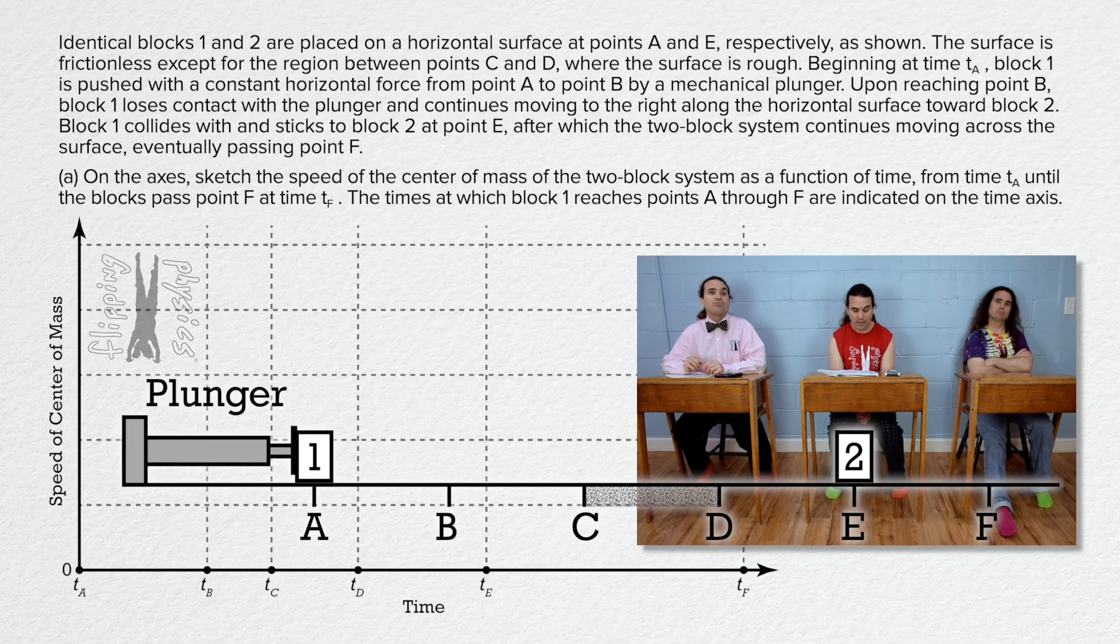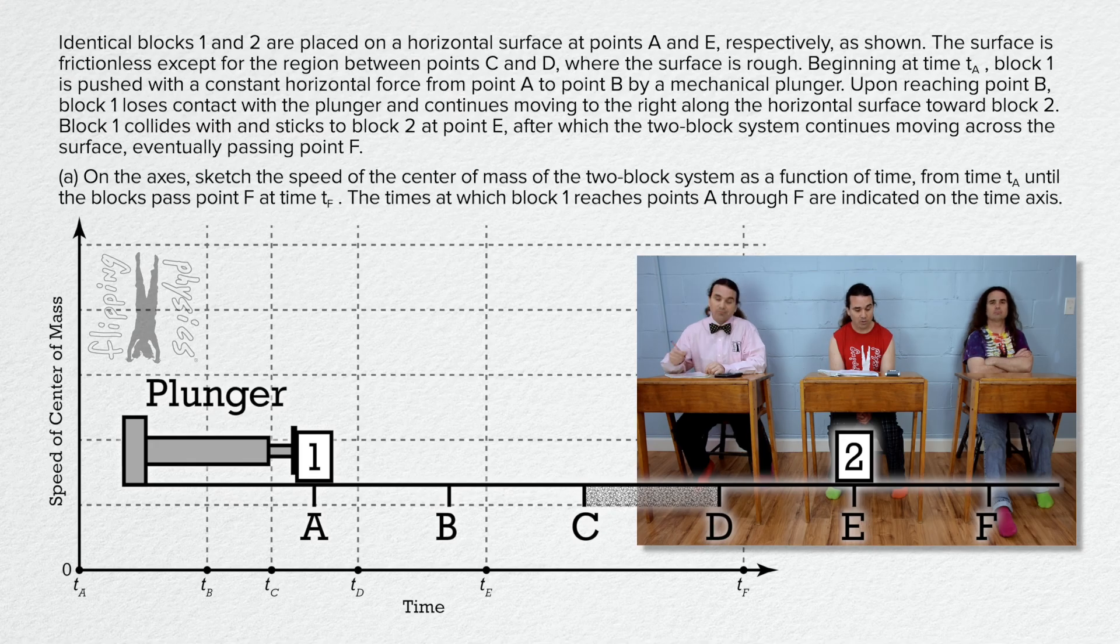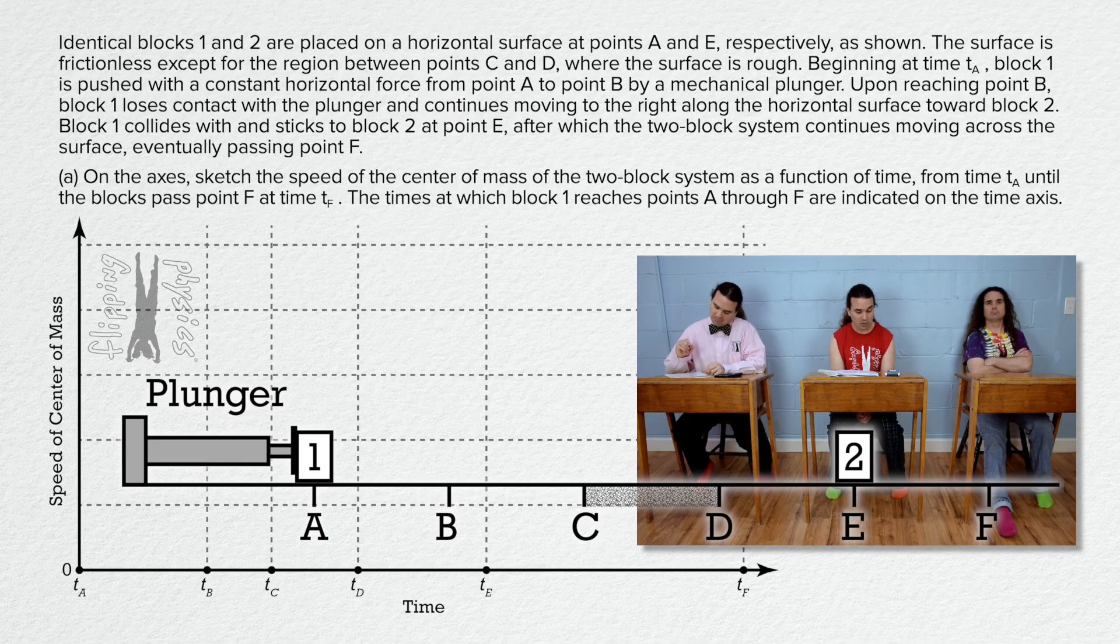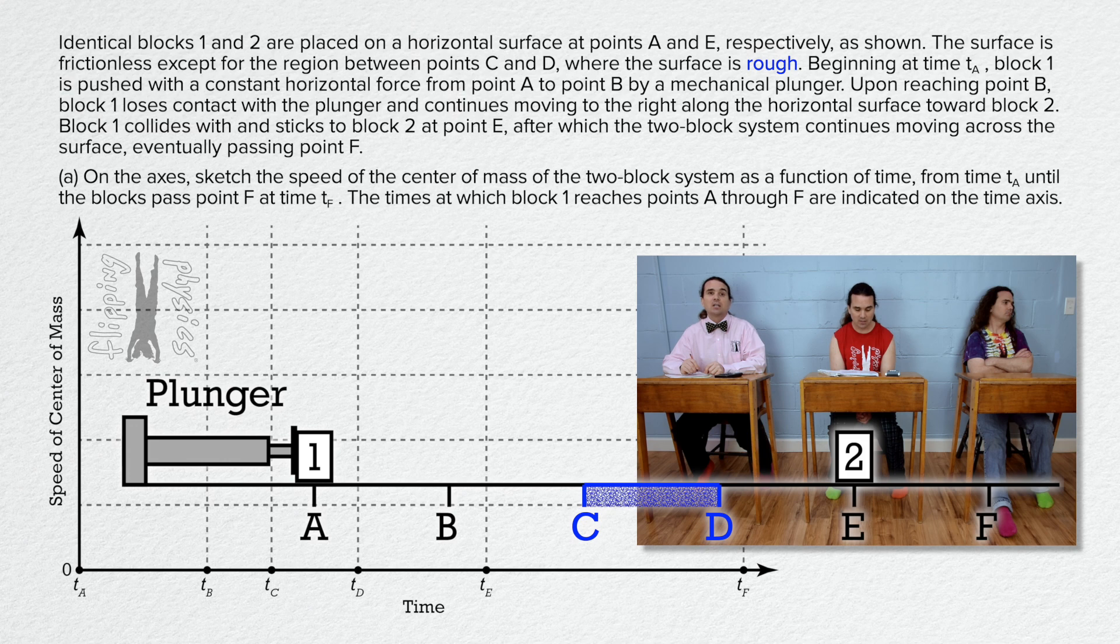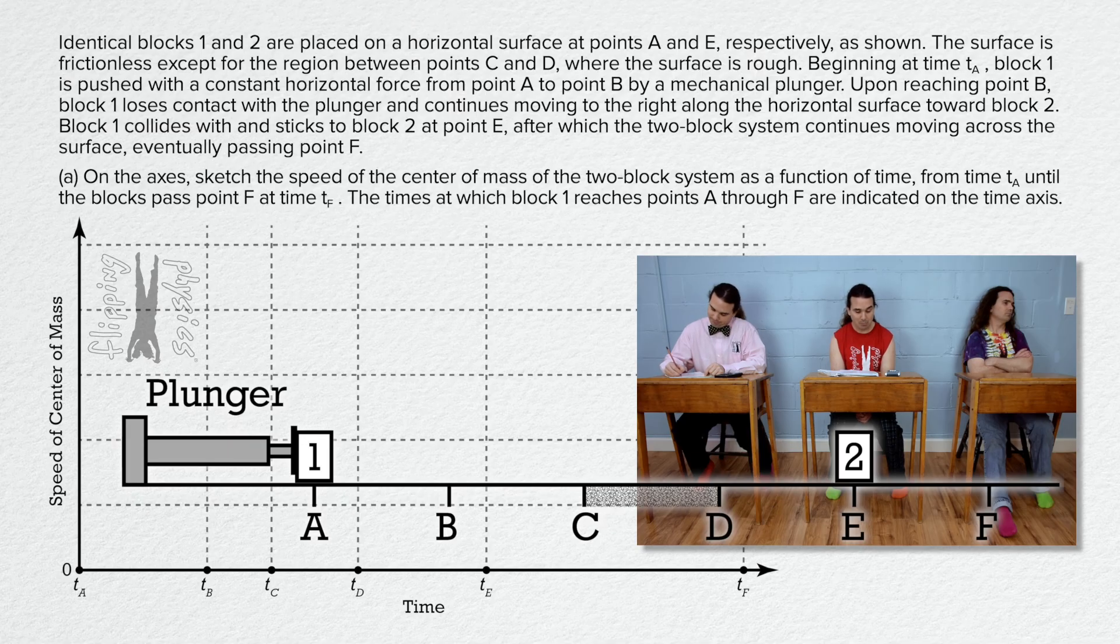Identical blocks 1 and 2 are placed on a horizontal surface at points A and E, respectively, as shown. The surface is frictionless except for the region between points C and D where the surface is rough. Beginning at time TA, block 1 is pushed with a constant horizontal force from point A to point B by a mechanical plunger. Upon reaching point B, block 1 loses contact with the plunger and continues moving to the right along the horizontal surface toward block 2.